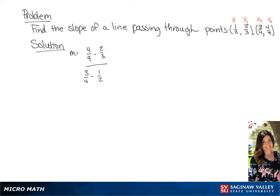The first thing we want to do is get a common denominator for both the top and the bottom so we can finish the subtraction. We're going to multiply as shown, which will give us 4 ninths minus 6 ninths over 3 fourths minus 2 fourths.